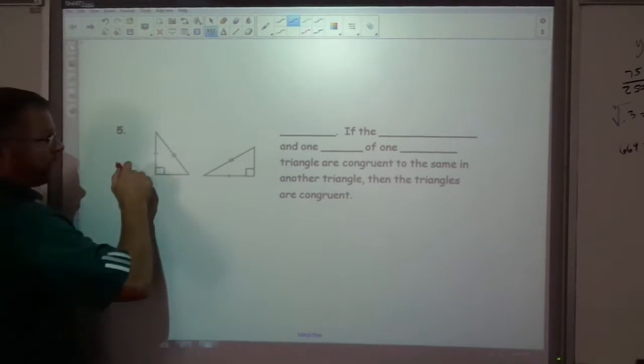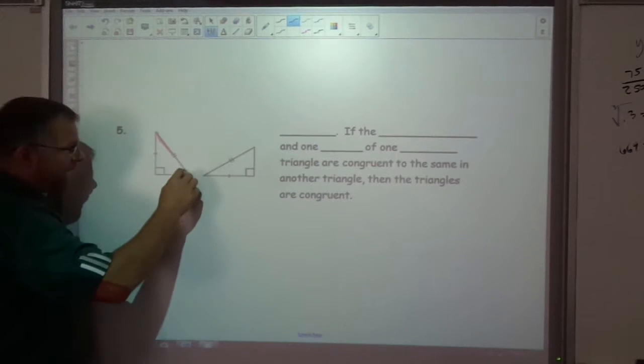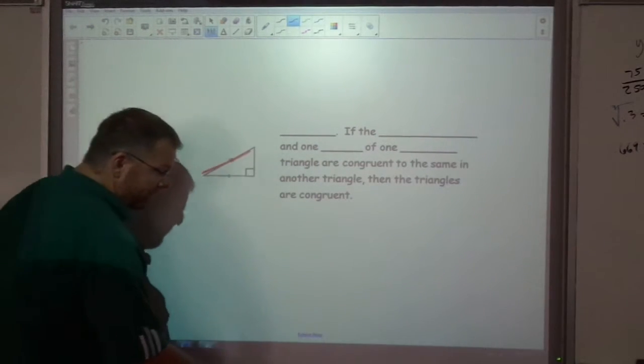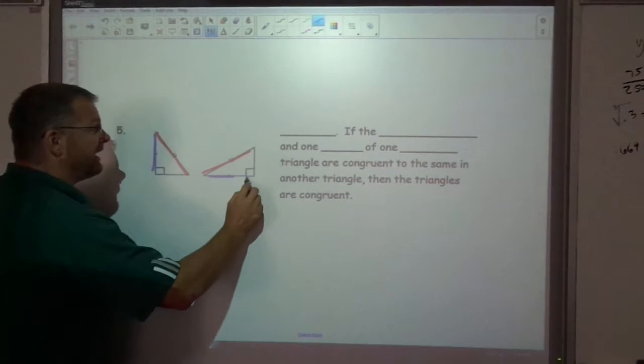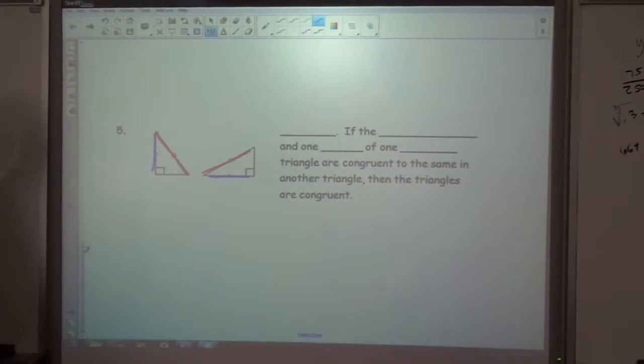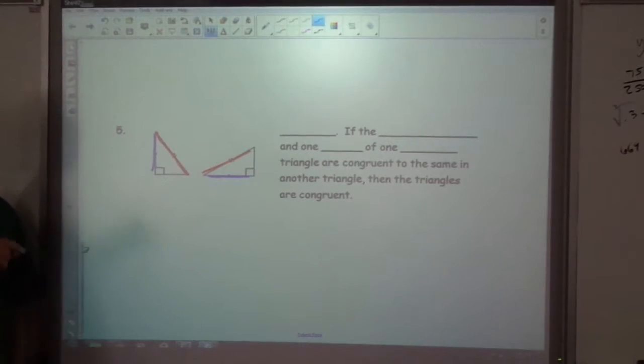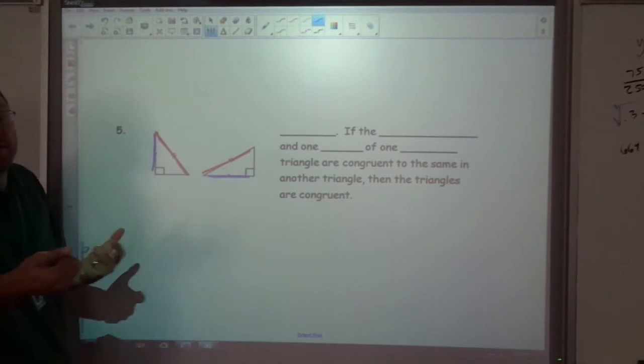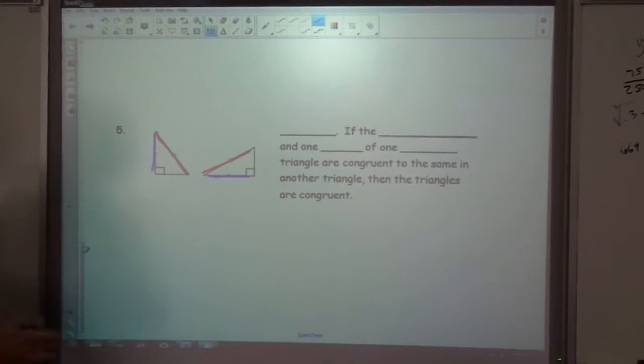Well, in a right triangle, if the hypotenuse is the same and one of the legs is the same, that's enough. Because then the third one would have to be the same because a squared plus b squared equals c squared. And you could figure out that third side, so really we'd have side, side, side.